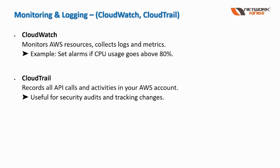In monitoring and logging, we cover two services: CloudWatch and CloudTrail. CloudWatch is a monitoring service — you can monitor your resources, collect logs, and apply metrics. Some metrics are managed and already available, but you can also create custom metrics to measure the performance of your services and applications. You can also set up alarms, for example an alarm if CPU utilization goes beyond 80 percent.